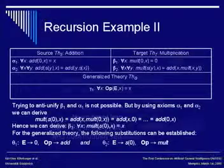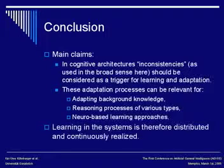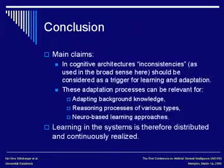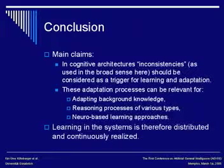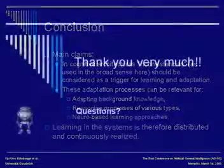The conclusions: in cognitive architectures, inconsistencies should be considered as a trigger for learning and adaptation. These adaptation processes can be relevant for adaptive background knowledge, for establishing an HDTP relation, and for neural-based learning. Learning in the system is distributed and continuously realized. Thank you very much.